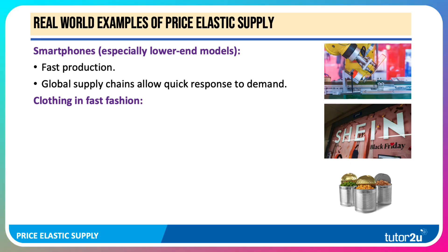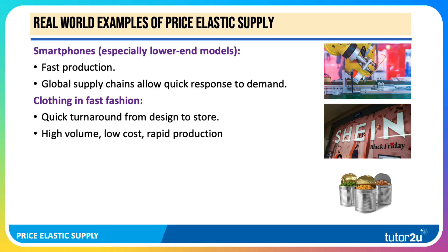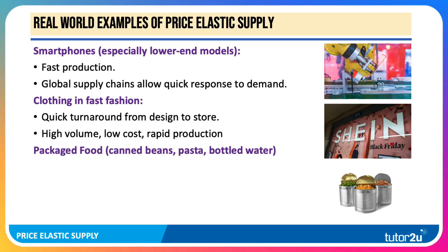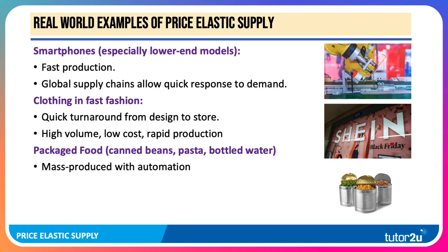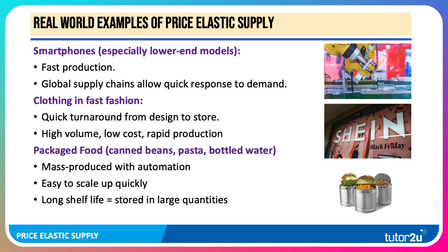Fast fashion is a really good example. Companies like Zara can turn a very quick turnaround from initial design to store. High volume, low cost, and rapid production are key features of fast fashion. Packaged food — things like canned beans, pasta, bottled water, and yoghurt — is mass-produced with heavily automated production processes, and in theory it should be easy to scale up quickly if there's a significant increase in demand, although that depends on spare capacity in manufacturing plants. Tinned food also has a long shelf life and can be stored in large quantities before it reaches its sell-by date.